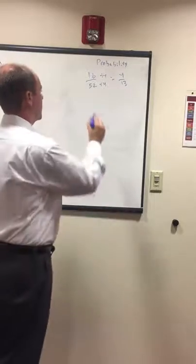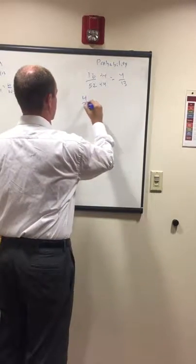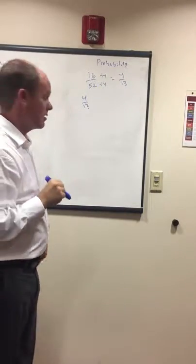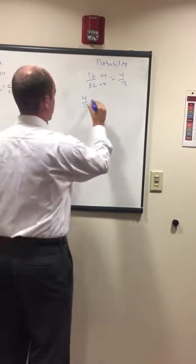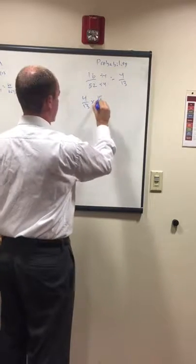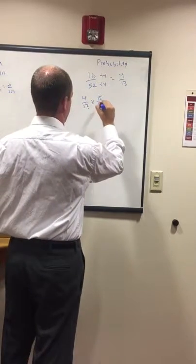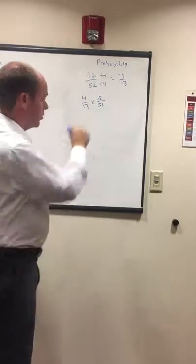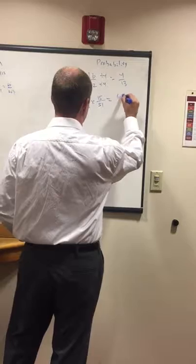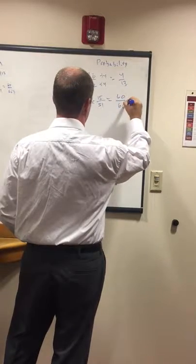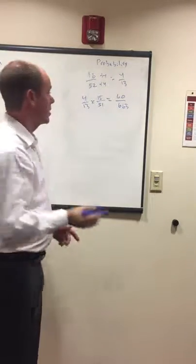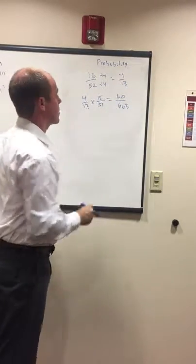What if they ask for two consecutive face cards? We already know it's four out of 13 to draw the first one. For the second draw, we now have 15 face cards remaining because one has left the deck, and 51 cards total. We multiply these together and get 60 over 663.